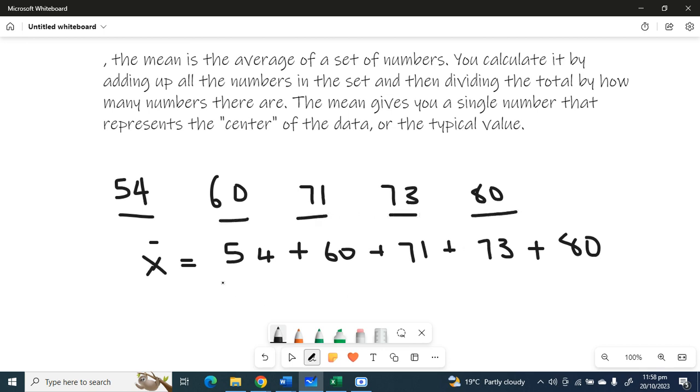So we have five numbers in our data set. Let me get my calculator. So 54 plus 60 plus 71 plus 73 plus 80, we'll get a total of 338.